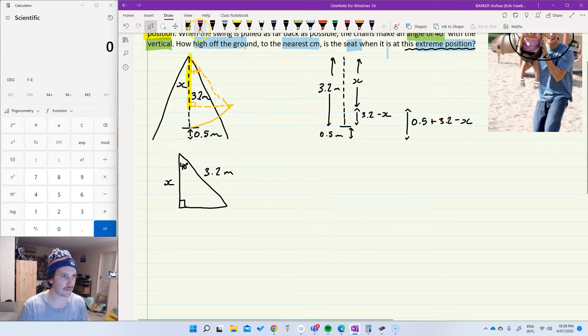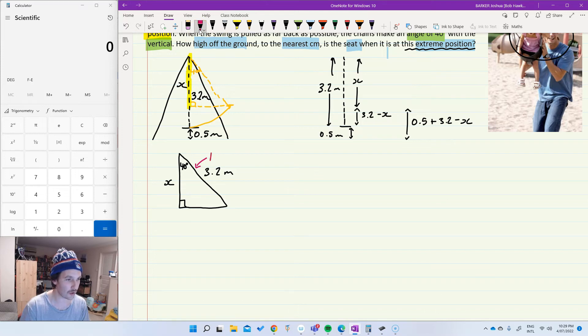If you're still getting the hang of your side names and what ratios to use, you could label them if you wanted to. So 3.2 is across from the right angle. That makes it the hypotenuse. X is next to the angle, which makes it the adjacent. So if I use my SOHCAHTOA acronym to figure out which ratio I want to use, I'm given the hypotenuse. I want to find what the adjacent is, which leaves cos as the ratio that's going to be good for us today.